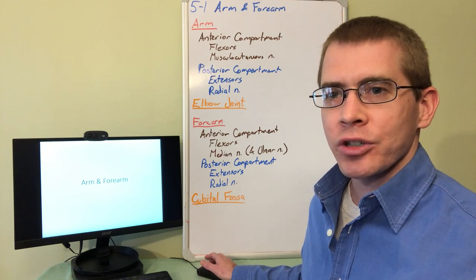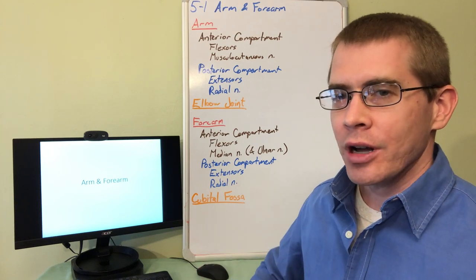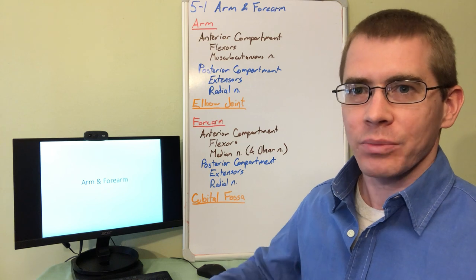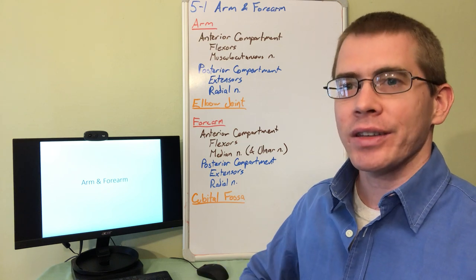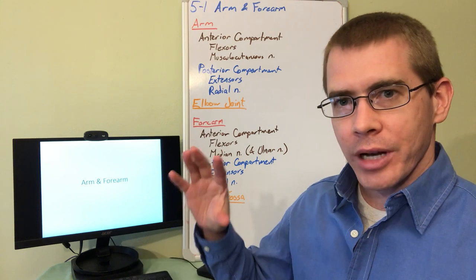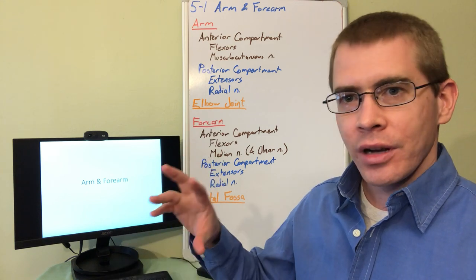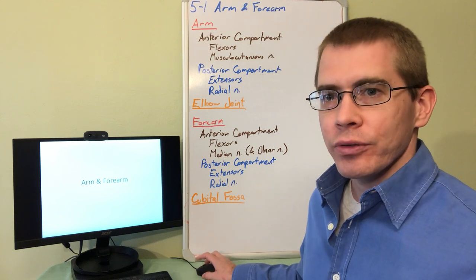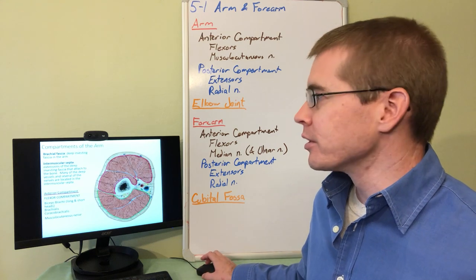Alright everyone, welcome to lecture 5-1. This lecture is going to be a little bit more meat and potatoes of what you anticipate anatomy style classes are going to be like. We're just going to cover the structures of the arm, learn about their innervation, their irrigation, all of those things. So I'm just going to quickly move through this lecture on the arm and the forearm.